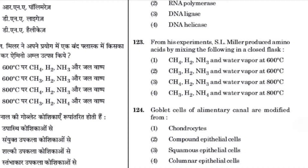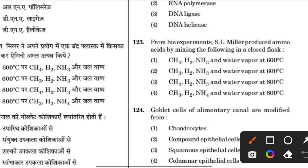From his experiment, Stanley Miller produced amino acids by mixing the following gases in a closed flask. The answer is 3: methane, hydrogen, ammonia, and water vapor at 800 degrees centigrade.